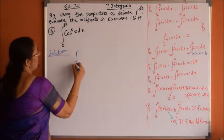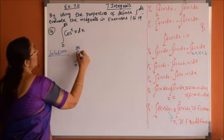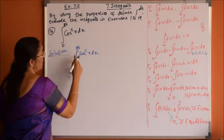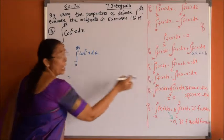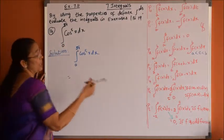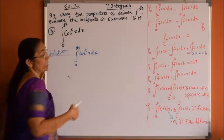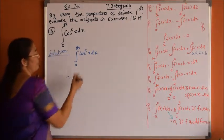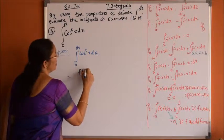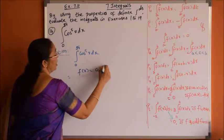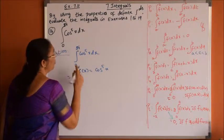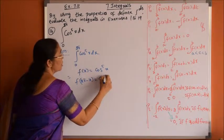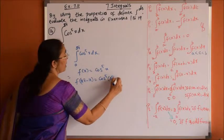Problem 14: integration of cos power 5x dx from 0 to 2 pi. This is in the form of integration of 0 to 2a of f of x dx. We check whether f of 2a minus x equals f of x or minus f of x. Here f of x is cos power 5x, and f of 2a minus x, where 2a is 2 pi, gives cos to the power 5 of 2 pi minus x.